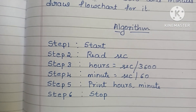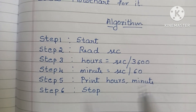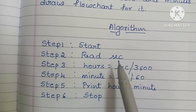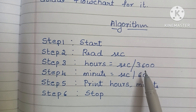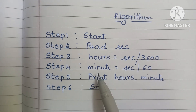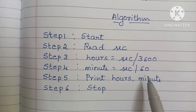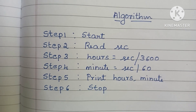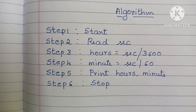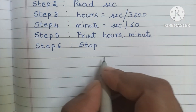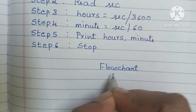So this is the algorithm to convert time format from seconds to hours and minutes: Step 1 Start, Step 2 Read Second, Step 3 Hours = Seconds / 3600, Step 4 Minutes = Seconds / 60, Step 5 Print Hours and Minutes, Step 6 Stop. Next, the flowchart — a flowchart is a graphical representation of a solved problem.